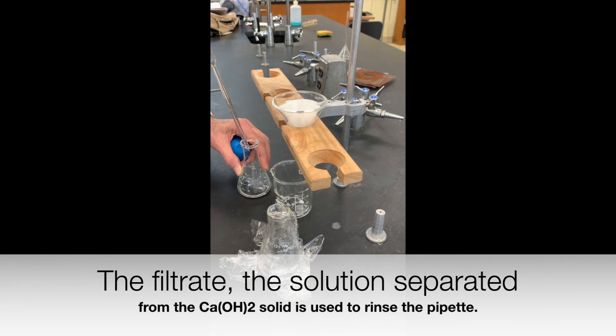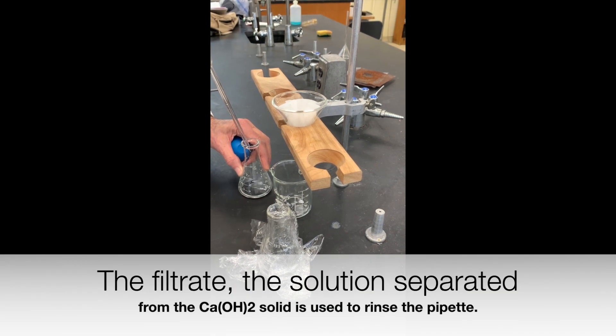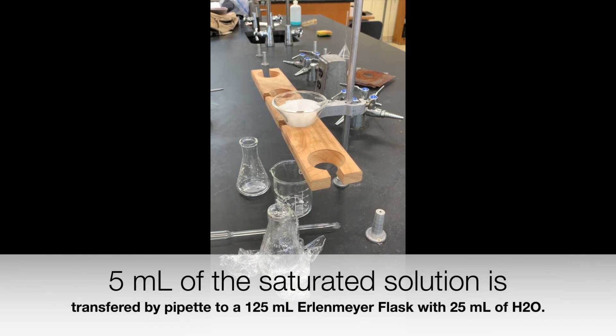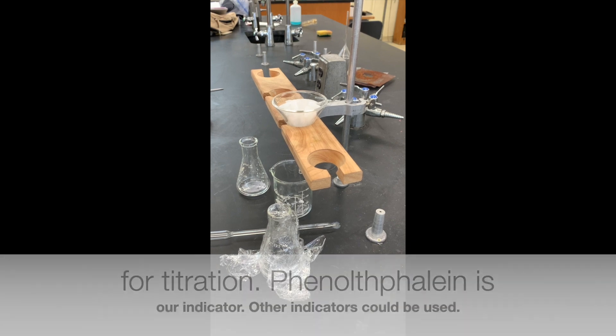The filtrate, the solution separated from the calcium hydroxide solid, is used to rinse the pipette. Then five milliliters will be removed using the pipette and added to an Erlenmeyer flask for titration.